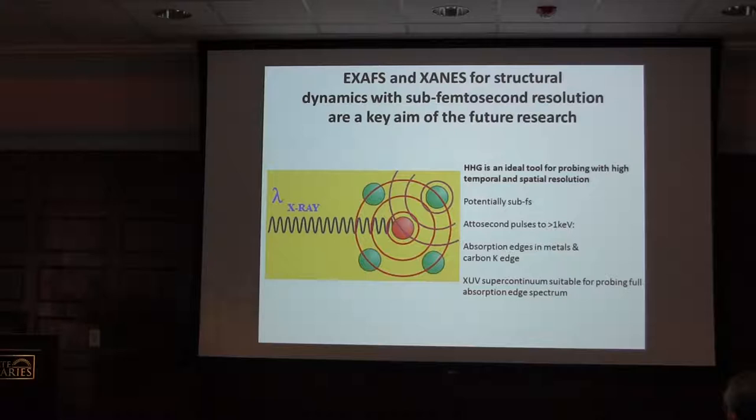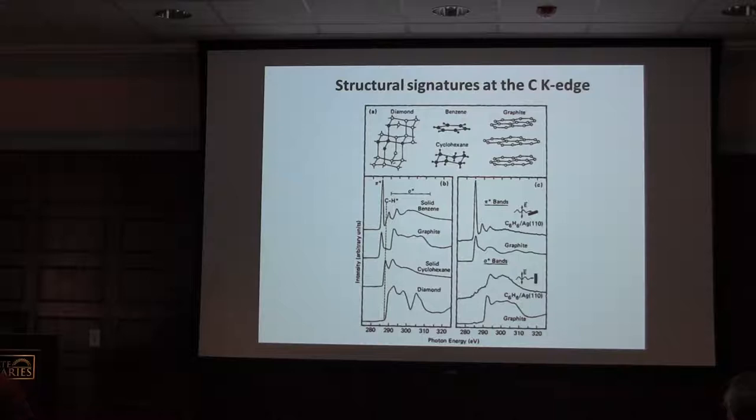I would argue HHG is actually very suitable for X-ray absorption because at least if it's done with an isolated attosecond pulse, it gives you a super continuum, it's more or less structureless, and that's what we need to do transient absorption measurements of absorption structures in the edges. Just to convince you there's lots of information there, here is the absorption measurements of the carbon K edge in different structures of carbon.